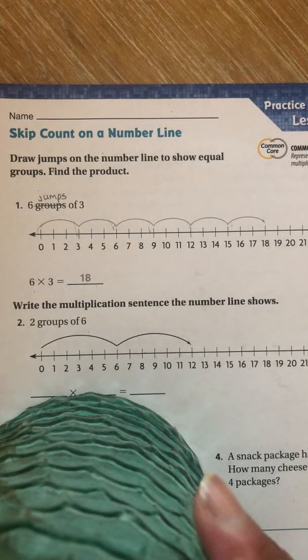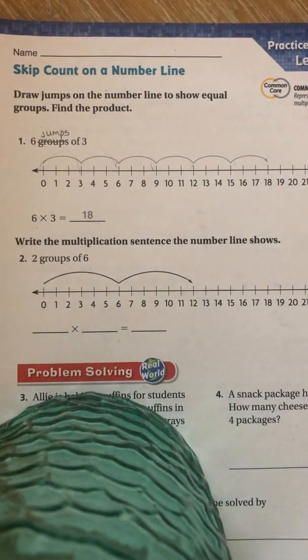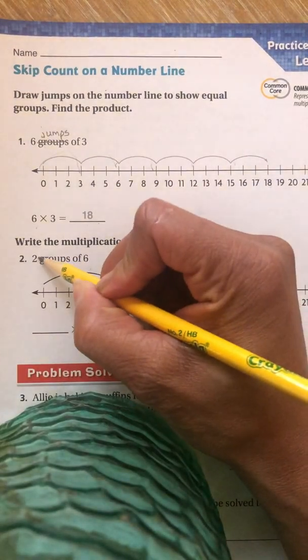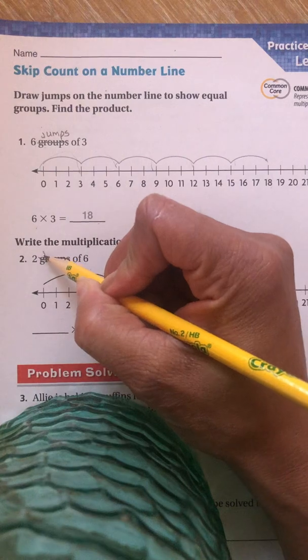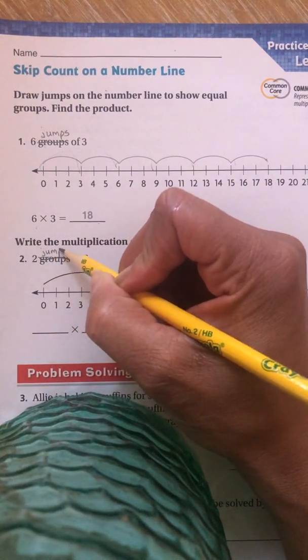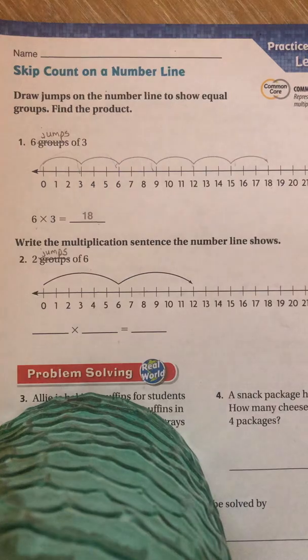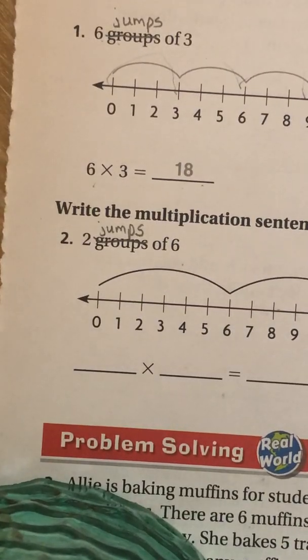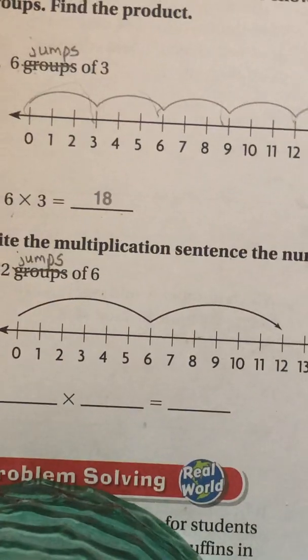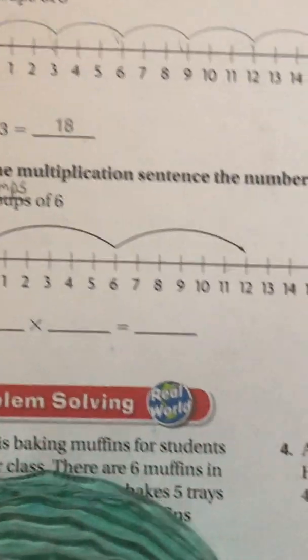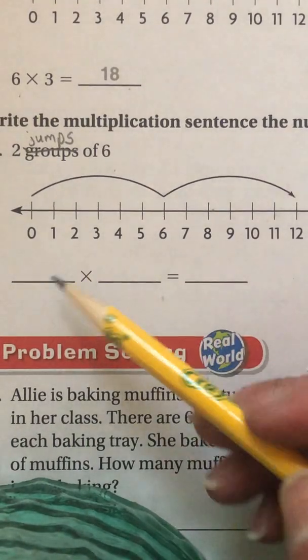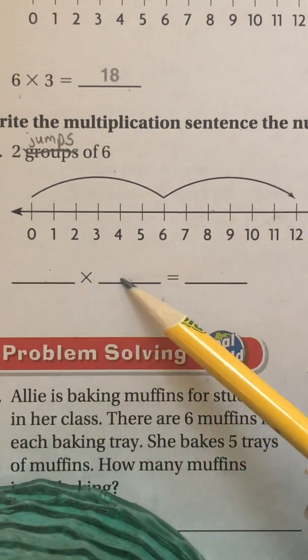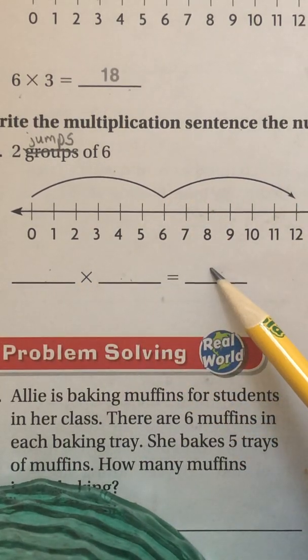So I am not going to do number two because number one was done for you. As an example, you have to now do two jumps. Again, I'm getting rid of the word groups and I'm writing jumps. You have to do two jumps of six. So you're going to jump twice, or excuse me, they already showed you two jumps and they counted by six. You just have to write the multiplication equation on the lines. Tell me the two factors that are being multiplied and give me the product.